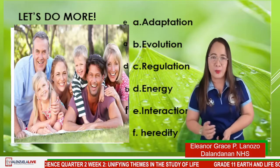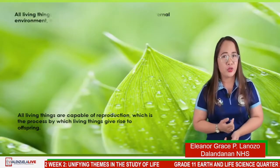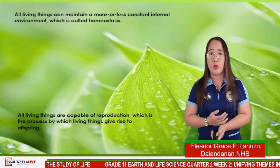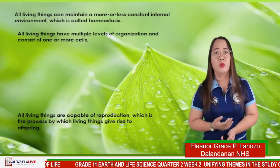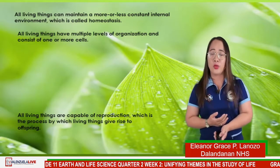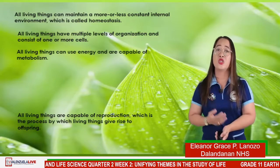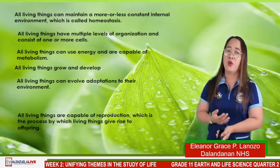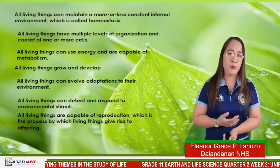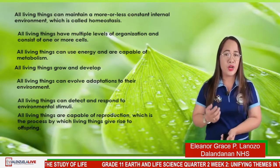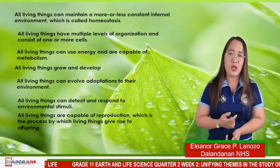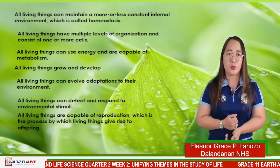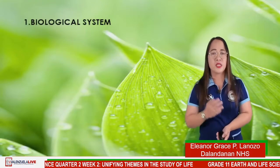Thank you so much for your participation. To sum up my lesson for today: all living things can maintain a more or less constant internal environment, which is called homeostasis. All living things have multiple levels of organization and consist of one or more cells. Living things can use energy and are capable of metabolism. All living things grow and develop, can involve adaptation to their environment, and can detect and respond to environmental stimuli. And lastly, all living things are capable of reproduction — the process by which living things give rise to offspring.